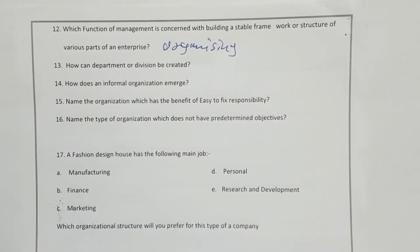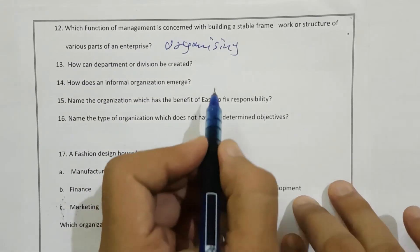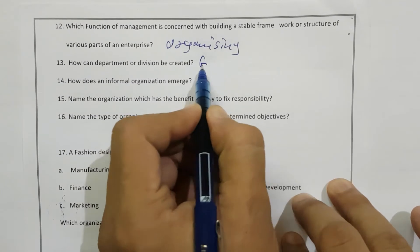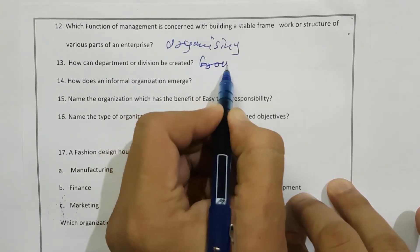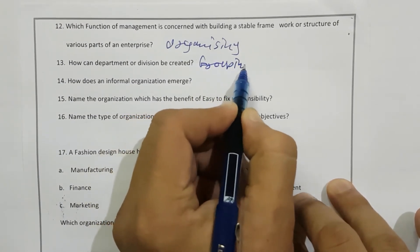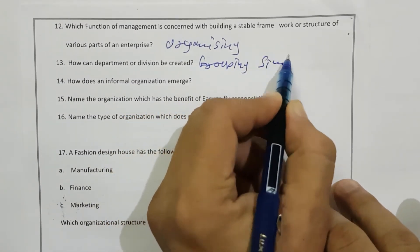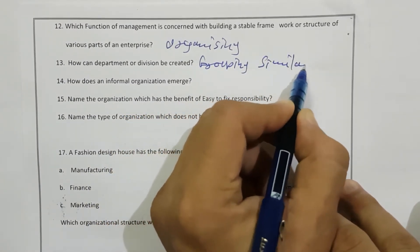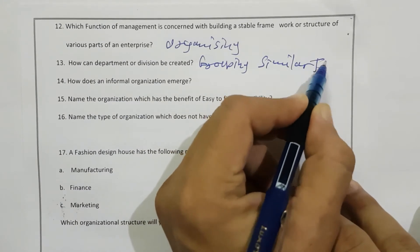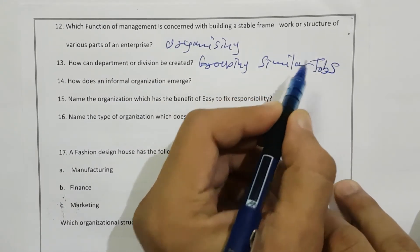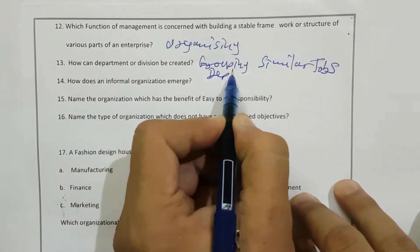How can departments or divisions be created? It is simply by grouping similar jobs together — grouping similar jobs — and that process is called departmentalization.